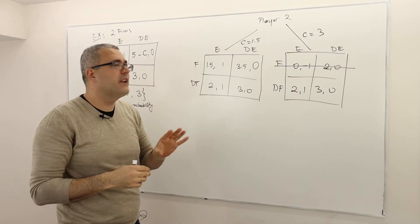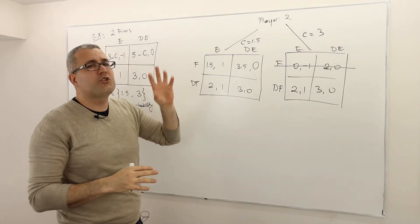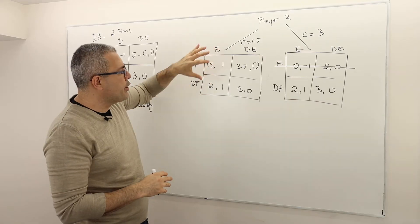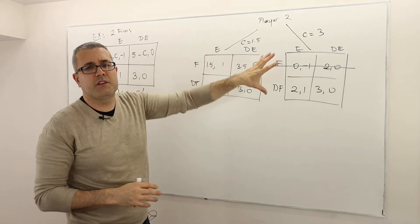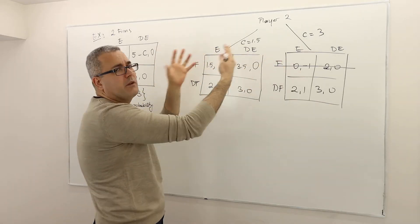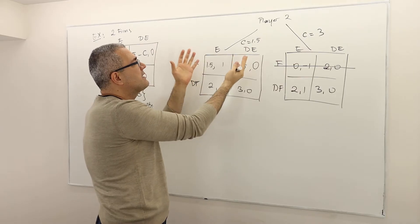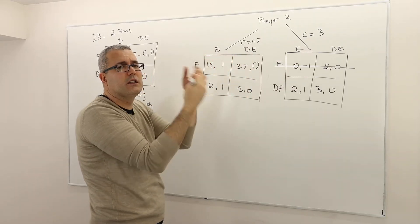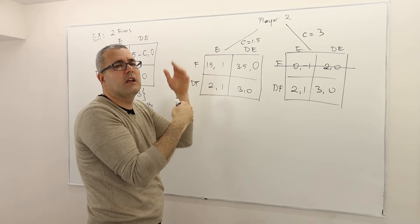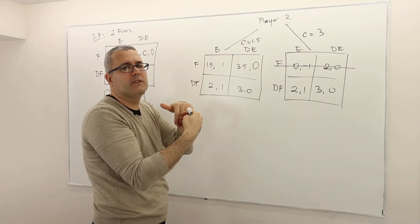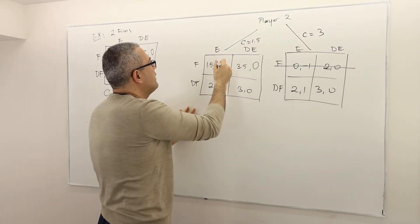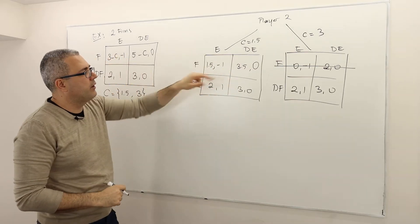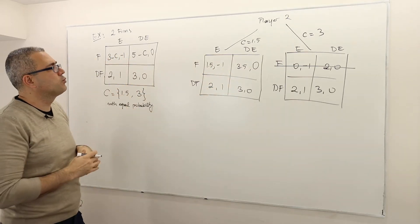So once again, strict domination — I can do it for player 1 because player 1 knows the matrix, but player 2 doesn't know the matrix, and so you cannot simply compare two columns for player 2 and conclude one strategy is strictly dominant or dominated.